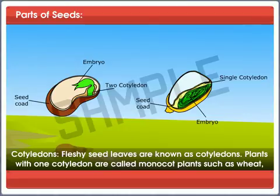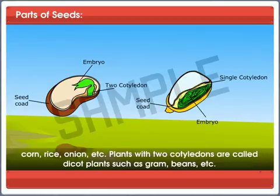Plants with one cotyledon are called monocot plants, such as wheat, corn, rice, onion, etc. Plants with two cotyledons are called dicot plants, such as gram, beans, etc.